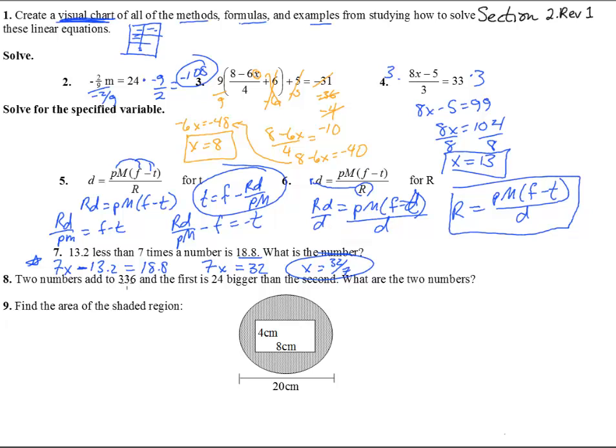Number eight. Two numbers add to 336. The first, I'm going to put f for first, is 24 bigger than the second. So what are the two numbers? I'm picking f for one variable, s for the other one. So the two numbers, f plus s, add to 336.